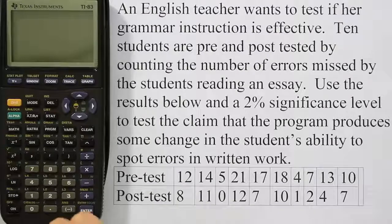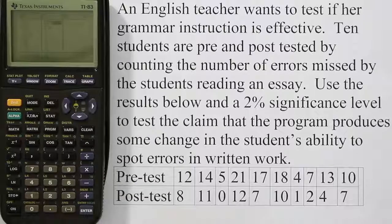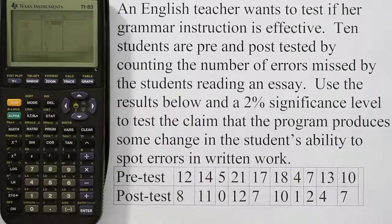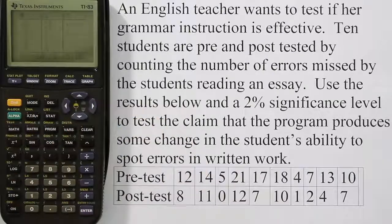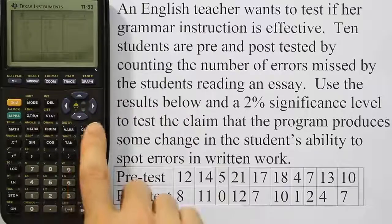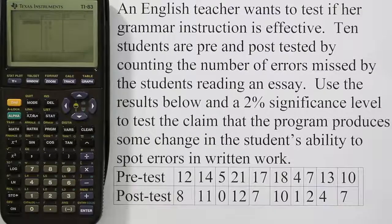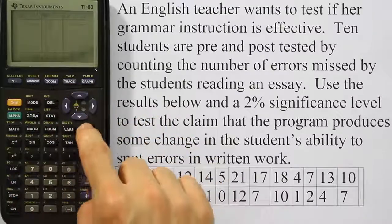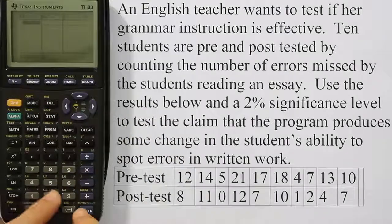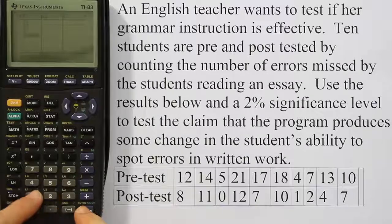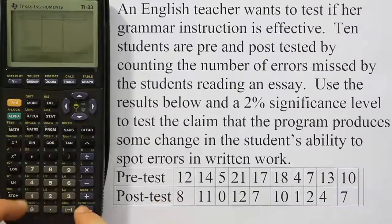What we're going to do to enter this data into the calculator is press stat and then after you press the stat key you just hit enter and this is going to take you to where the list of data are. We need to put this data into L1 and L2. I'm going to come up to the top where the L1 is, so I push up on the up arrow until I get to where L1 is highlighted and I hit clear and then I'm going to push down arrow to move me back into the list. If I go over to L2 I can do the same thing. Now let's go back over to L1 and type in all these numbers: 12, 14, 5, 21, 17, 18, 4, 7, 13, and then finally 10.